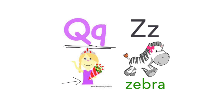We will also look today at the letter Z. The letter Z makes the sound z. This is a zebra. Zebra begins with the letter Z. Let's learn more about the letter Q and the letter Z.